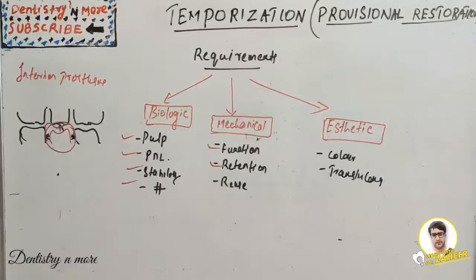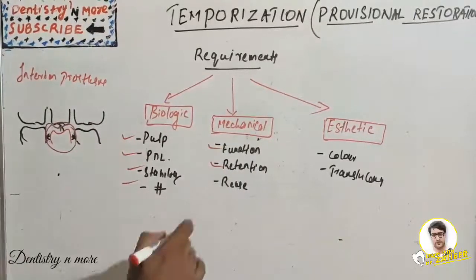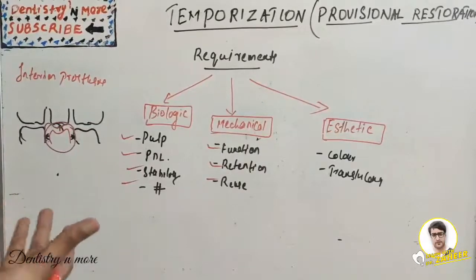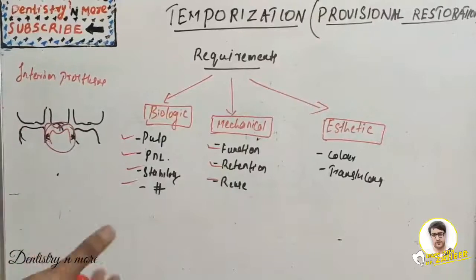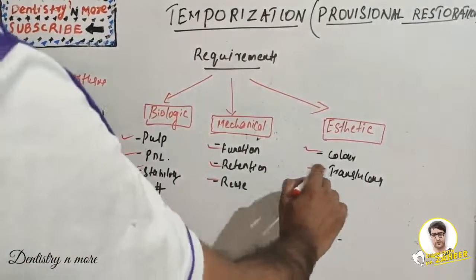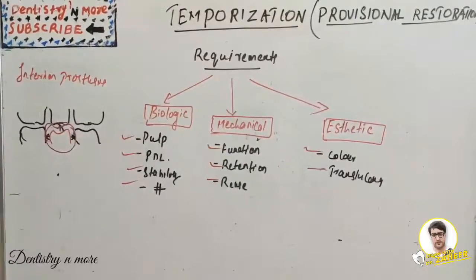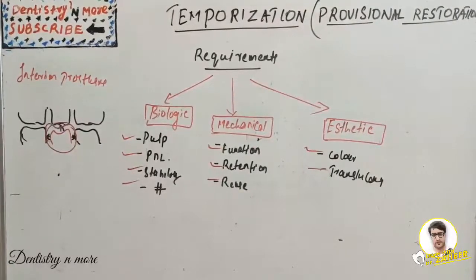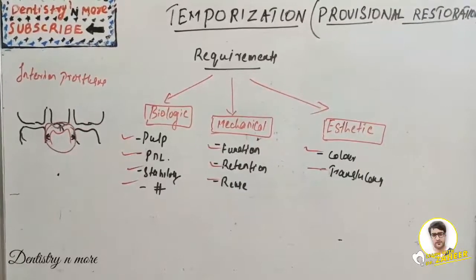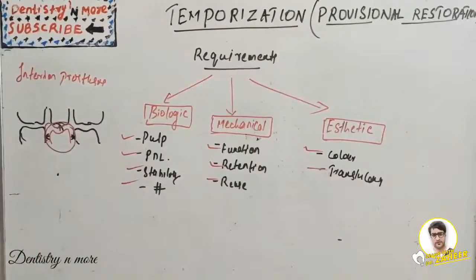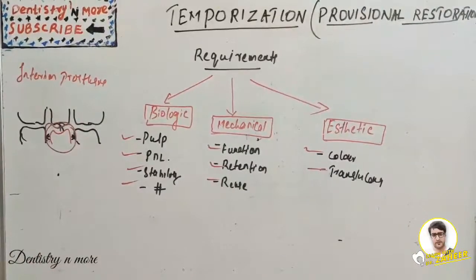Regarding retention, it should have close adaptation to the prepared tooth surface to prevent displacement and re-cementation, which would increase patient visits. Provisional restorations may need to be removed and re-cemented often, so if they are well fabricated with adequate thickness and cemented with weak cement, they can be removed without breakage. For aesthetics, the restoration should match the shape, size, color, and texture of the restored tooth, especially in the anterior region. Color stability is also important if the provisional is to function for a prolonged period, and it serves as a guide for achieving aesthetics in the final restoration.